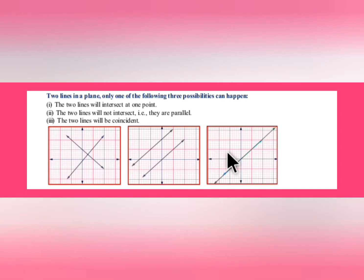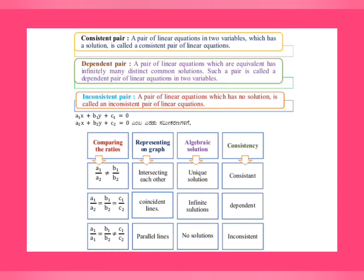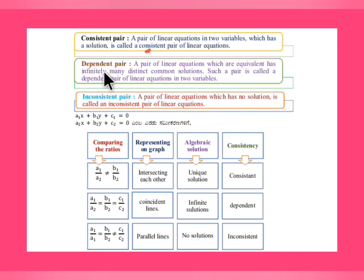When plotting on a graph using the graphical method, there are three types of solutions for a pair of linear equations: consistent, dependent, and inconsistent. A consistent pair has a solution. A dependent pair has infinitely many distinct common solutions. An inconsistent pair has no solution at all — if they have a solution it's consistent; no solution is inconsistent; many solutions means dependent.